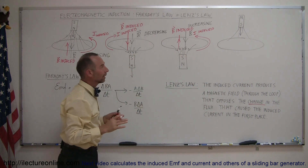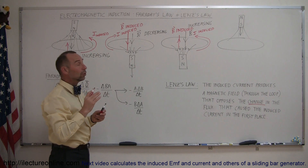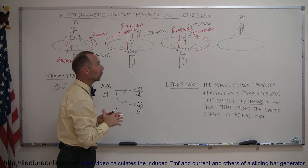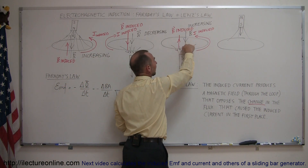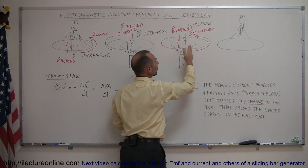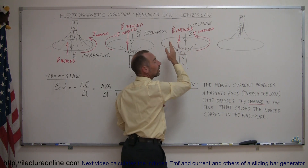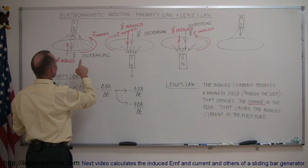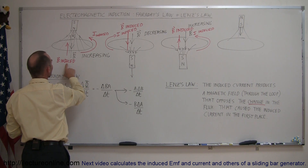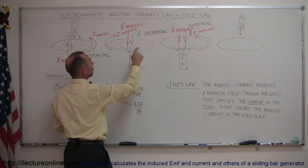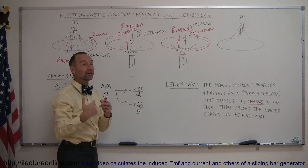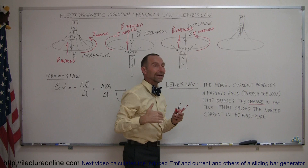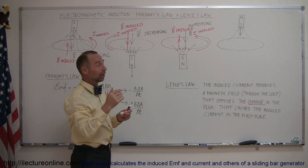Remember: the induced EMF causes an induced current, which sets up its own magnetic field that opposes the change that caused it in the first place. You can see the pattern now. If the magnetic field is increasing, the induced magnetic field will be in the opposite direction. If it's decreasing, the induced magnetic field will be in the same direction, because it's trying to prevent it from decreasing. Here it's increasing, so the induced magnetic field will be in the opposite direction to try and keep it from increasing.